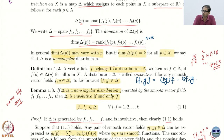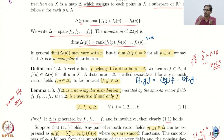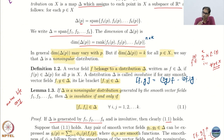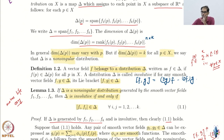We are asking for more things now. We talked about distribution and non-singularity. Now we say what it means for a vector field to belong to a distribution — that is straightforward: if you plug in any point, f(p) belongs to delta(p). Then a distribution is involutive if two vector fields belonging to the distribution means their Lie bracket also has to belong to the distribution.